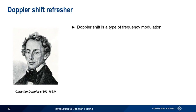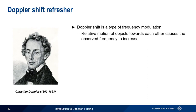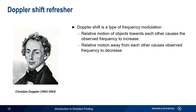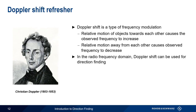If objects are moving towards each other, relatively speaking, then the frequency of the waves emitted by one object will appear to increase. Similarly, if the objects are moving away from each other, then there is a downward shift in the frequency. Doppler shift applies to many different domains. All of us are familiar with Doppler shift in the audio frequency domain, such as the change in pitch in the whistle of a passing train. Doppler shift also occurs in the visible energy domain, such as the red shift of stars moving away from the Earth. In the radio frequency domain, we can apply the principle of Doppler shift for the purposes of direction finding.